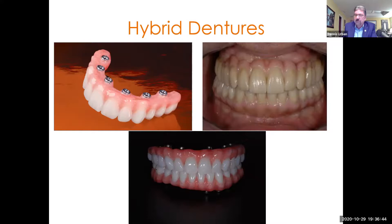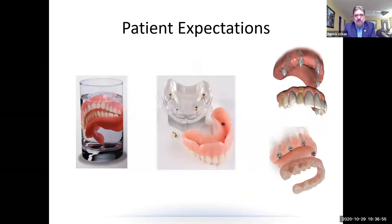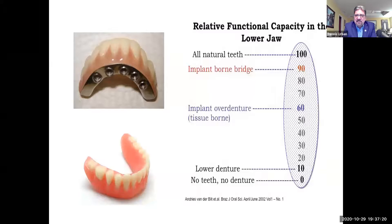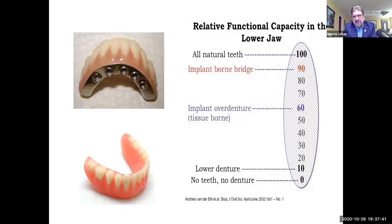Let's talk a little bit about hybrid dentures. Patient expectations are really important — we want to make sure we meet them, and if they're not reasonable, we have to come up with an alternative plan. Looking at the relative functional capacity of the lower jaw: with all natural teeth it's 100%; a lower denture drops to only 10%; an implant overdenture is 60%; and an implant-borne bridge or hybrid case achieves 90% functional capacity. This makes you wonder what patients go through if they didn't have the right occlusal scheme or function with just a regular denture all these years.